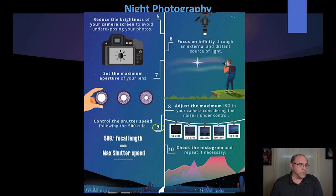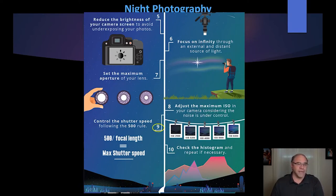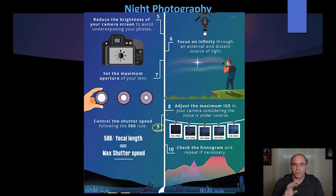Then we're going to control the shutter speed — this is where the 300 rule comes in to minimize star trails. I'll show you a chart for the 300 rule. Then look at the histogram to make sure you're actually getting an exposure. It's not going to look right on the back of your camera, but you want to confirm you're getting a usable exposure.